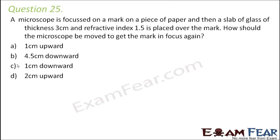Question number 25. A microscope is focused on a mark on a piece of paper, and then a glass slab of thickness 3 centimeters and refractive index 1.5 is placed over the mark. When a glass slab is introduced, light undergoes refraction, so the position of the mark that you see is the apparent depth — not the real depth. The real depth of the mark is 3 centimeters, which is the thickness of the glass slab.